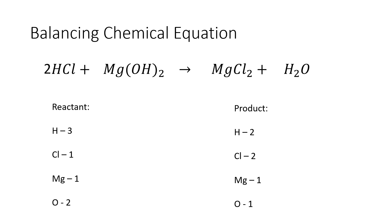First, we put a coefficient of 2 in front of hydrochloric acid so that our hydrogen in the reactant side will have a total of two. And since there are two hydrogen in the reactant side, we simply put a coefficient of 2 in front of water. So our hydrogen now becomes two on the product side, and it is now balanced.